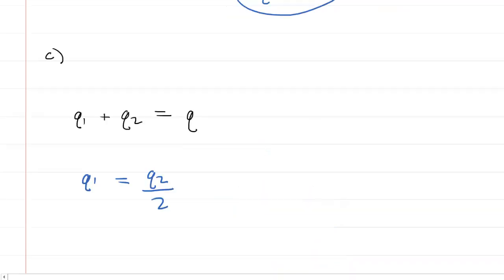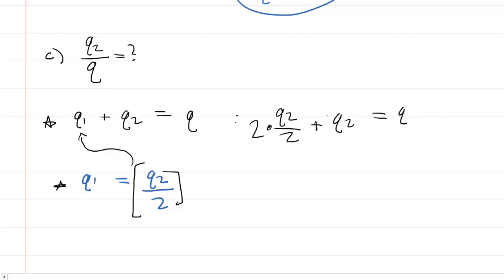Now in part C, we're being asked what fraction of the charge Q ends up on sphere two. So we're basically being asked for Q2 divided by Q. We can take the two equations that we starred earlier and again just algebraically manipulate them. Why don't we plug Q2 divided by two in for Q1? So we then have the following equation, Q2 over two plus Q2 is equal to Q. We might multiply both sides of the equation by two. So basically that means we'll multiply each term of the equation by two. These twos cancel. So now we have Q2 plus two Q2 is equal to two Q.